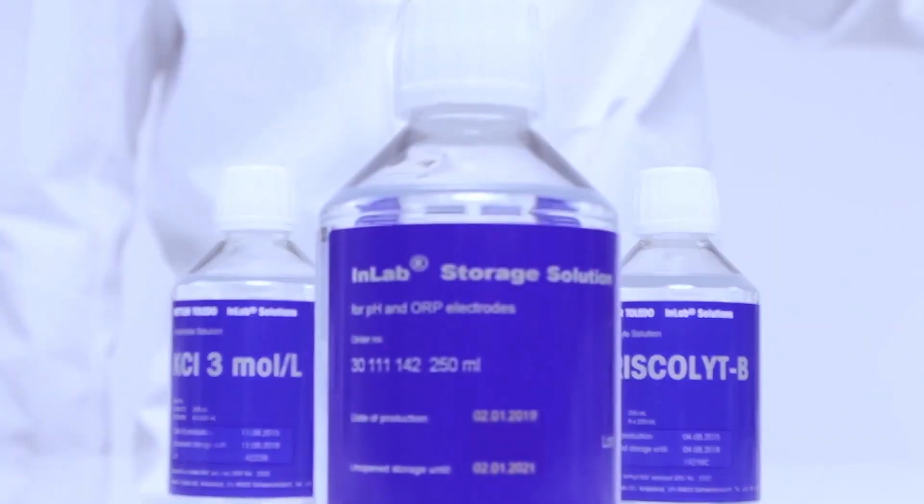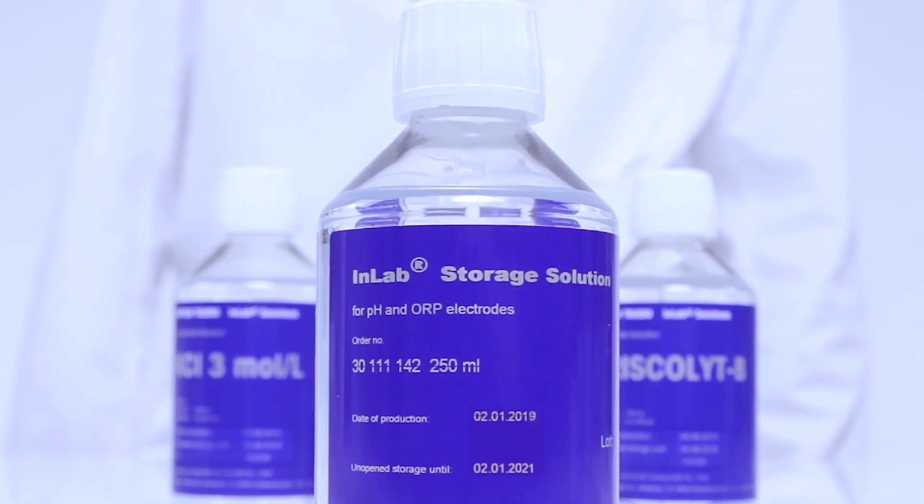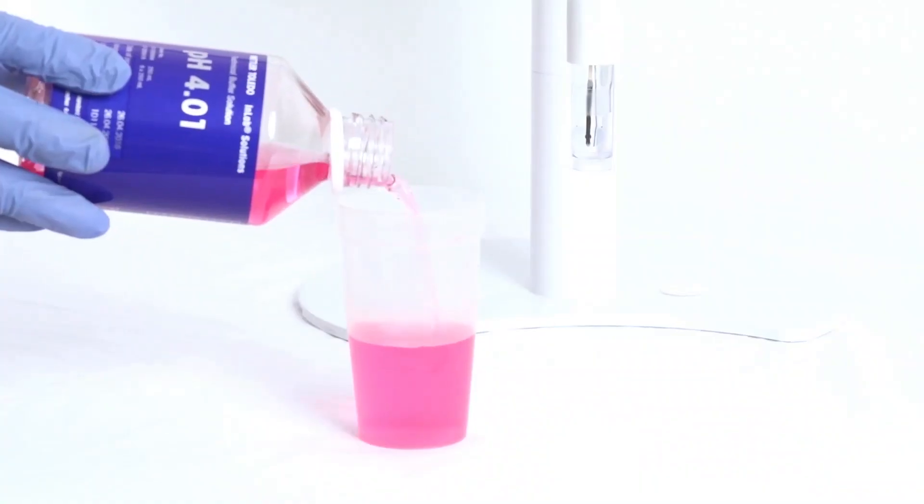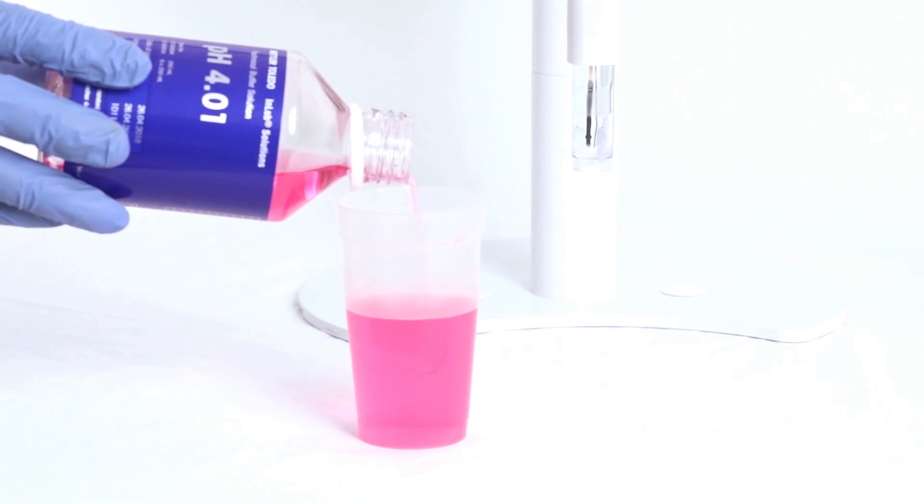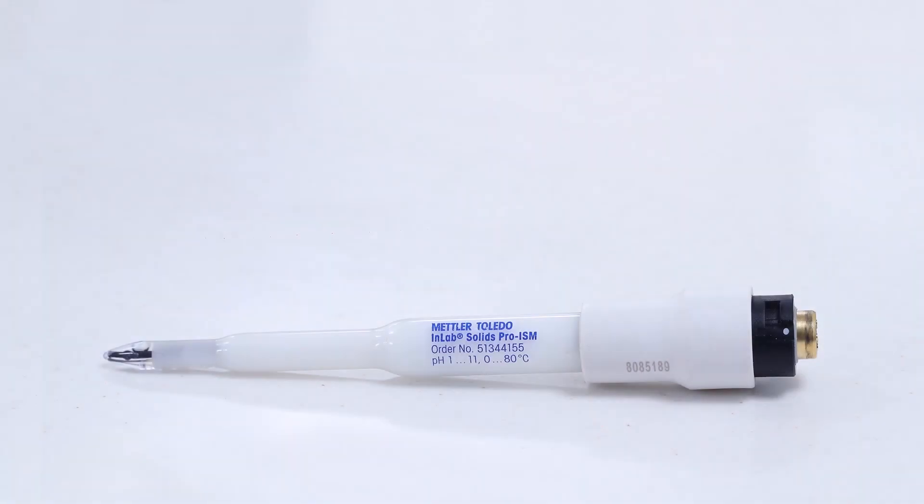Store the electrode in InLab storage solution when not in use. Ensure use of correct buffers in the correct sequence. Always use fresh buffers. Check the expiry date. The pH range for InLab Solids Pro-ISM is 1 to 11 pH units.